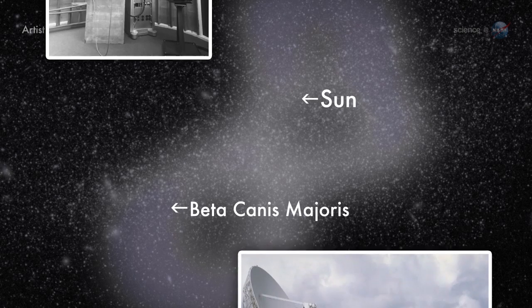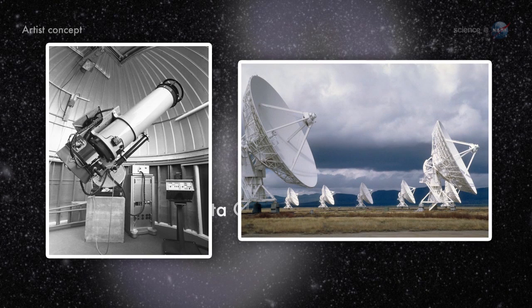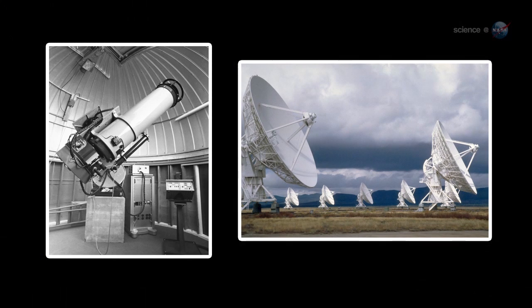The local bubble was discovered gradually in the 1970s and 1980s. Optical and radio astronomers looked carefully for interstellar gas in our part of the galaxy, but couldn't find much in Earth's neighborhood.